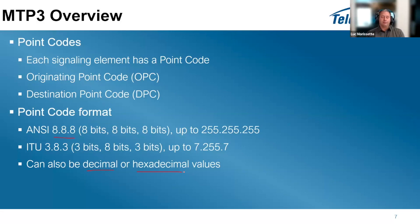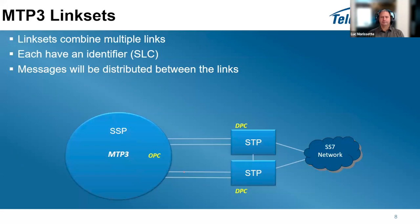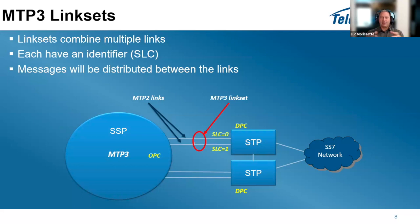In Wireshark you can choose how you want to display point code formats. When talking about MTP3 we also need to discuss link sets, which combine multiple links together. For example, between an SSP and an STP you may have two MTP2 links configured and aggregate them into one MTP3 link set. Within that link set each link has an SLC identifier - SLC0 for the first link, SLC1 for the second - and the SLC value ranges from 0 to 15, so you can have up to 16 links in a link set.